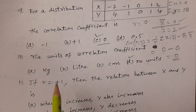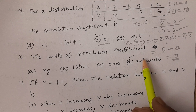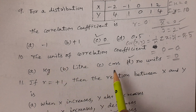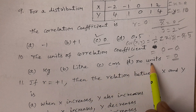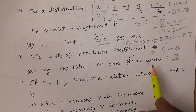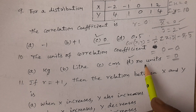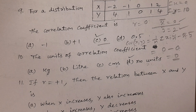In Telugu: the units of the correlation coefficient — the answer is no units. The first property of correlation coefficient is that it is purely a number; it does not depend on any units of the data. So the answer is no units.